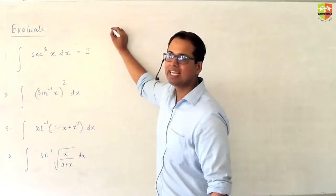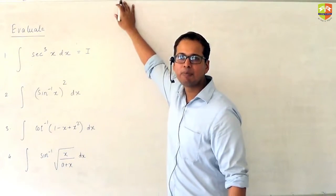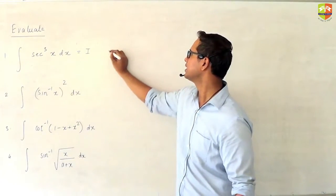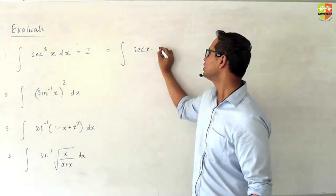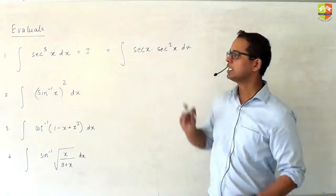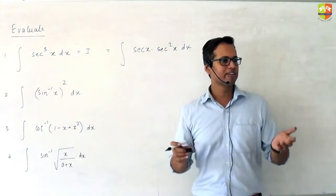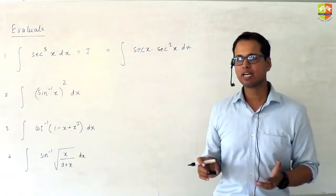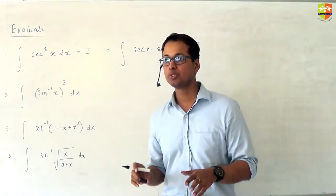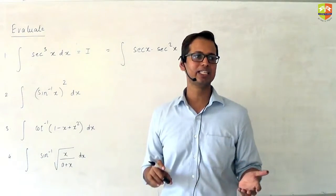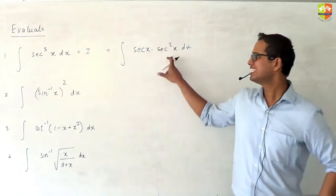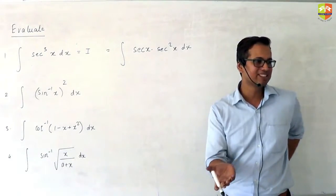Now, if I have to apply integration by parts on this, remember the basic core of IBP — integration by parts — is we have to take that function as u which is difficult to integrate, and that function as v which is relatively easier. The integration of sec²x is tan x, so I take sec²x as v and sec x as u.